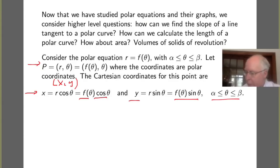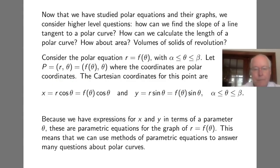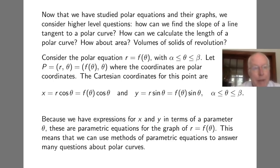Again, theta runs between alpha and beta. Now what we actually have here are expressions for the x and y coordinates of a point on this curve in terms of a parameter theta. In other words, we have come up with parametric equations for the graph described by the polar equation R equals f of theta, and this means we can use the methods of parametric equations to answer many questions about this polar curve.